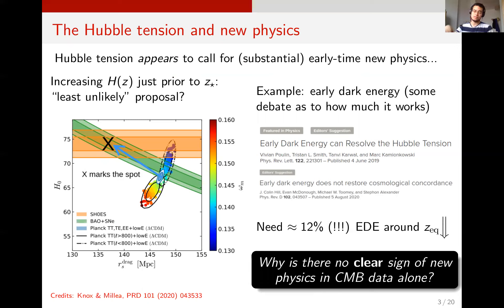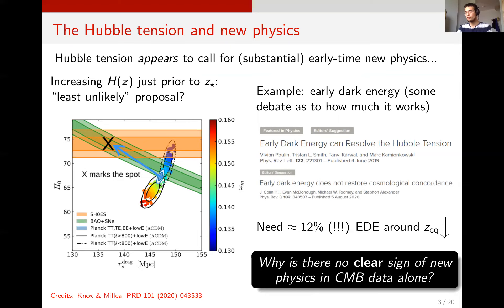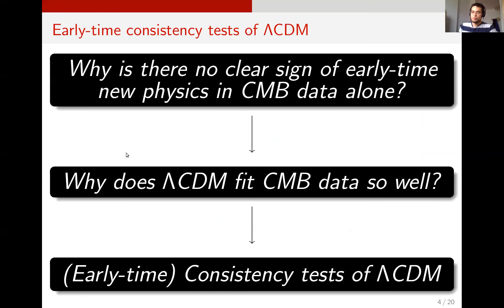One example in the case of early dark energy is you need roughly 10–12 percent of the energy density of the universe in early dark energy around matter-radiation equality. That's a huge amount of new physics. So this begs the question: why is there no clear sign of new physics in the CMB alone if there is such a huge amount of it? This in turn motivates early time consistency tests of Lambda CDM.